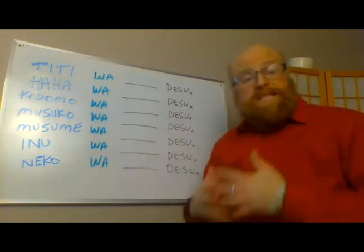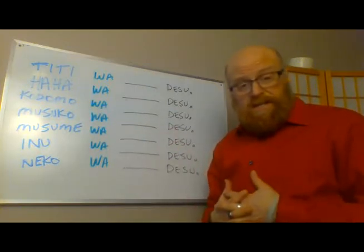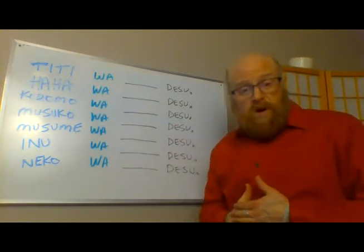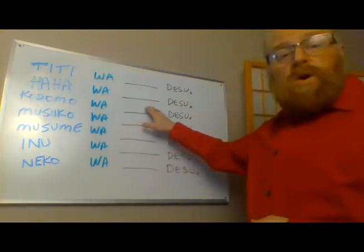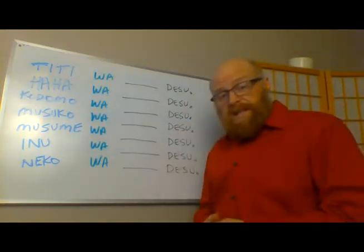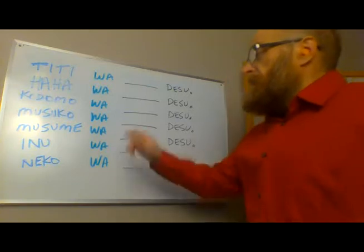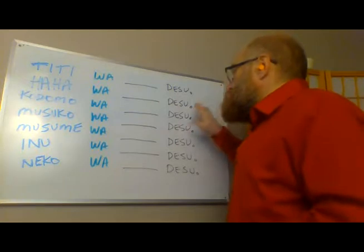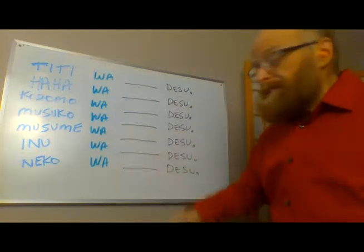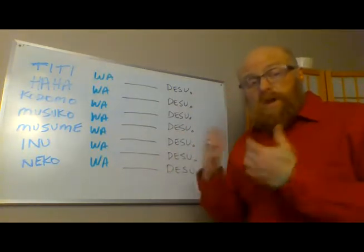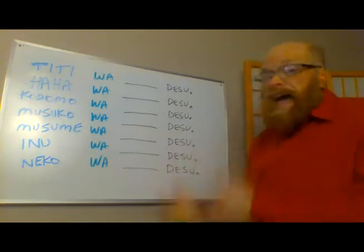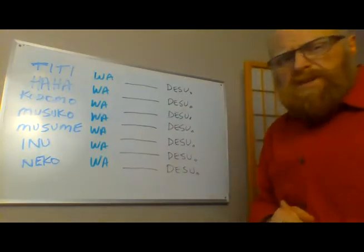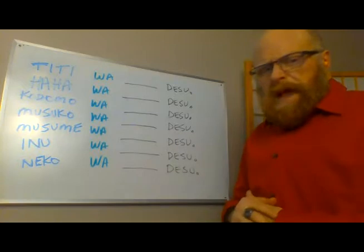Now we have Kodomo. Kodomo means child — my child. So Kodomo wa Kota desu — my child's name is Kota. Try it by putting in your own child's name: Kodomo wa [name] desu. If you remember from previous lessons, desu is a copula — it means 'is.' So you're literally saying 'as for my child, is [name].' We'll talk more about Japanese grammar structure in a while, but for now we're just going with vocabulary.